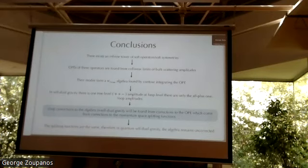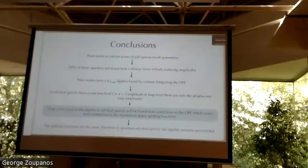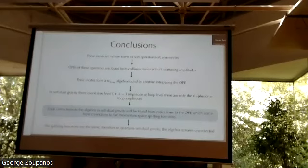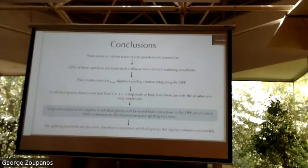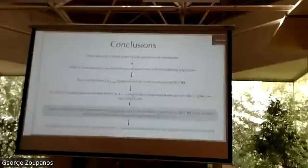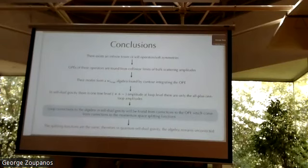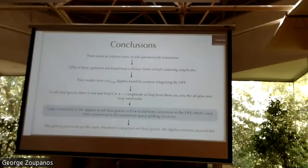Looking at what Pope and collaborators did, it seems like the deformation from little-w to big-W is a quantum effect in the boundary theory, not a quantum effect in the bulk theory. Maybe that's what was found — something being deformed in the boundary theory — whereas this is a quantum effect in the bulk theory. If there are no more questions, it's time to break for lunch.